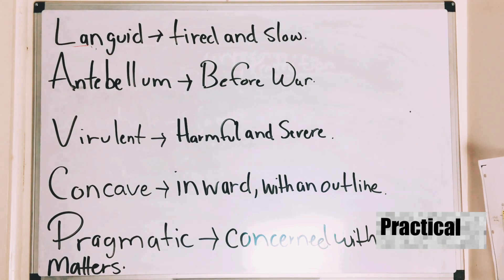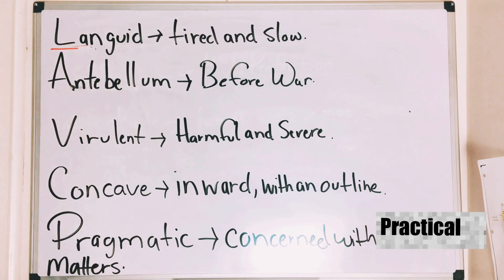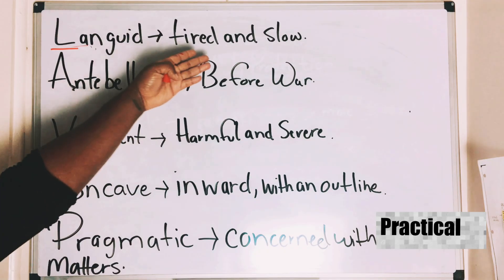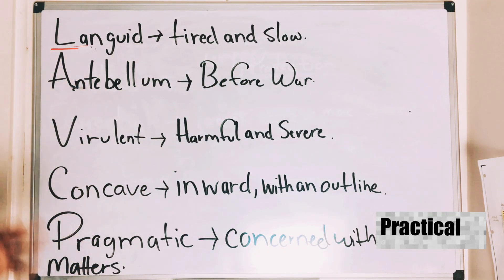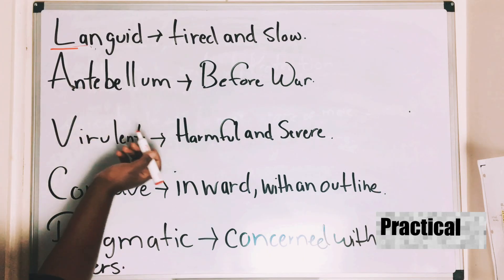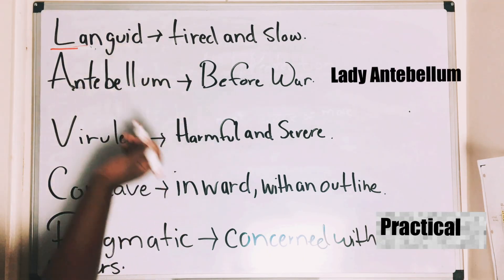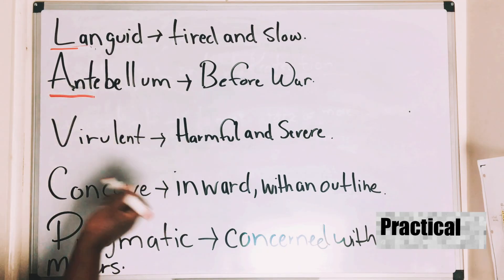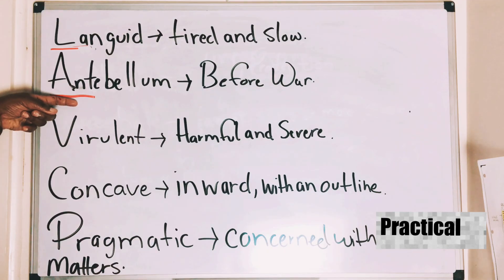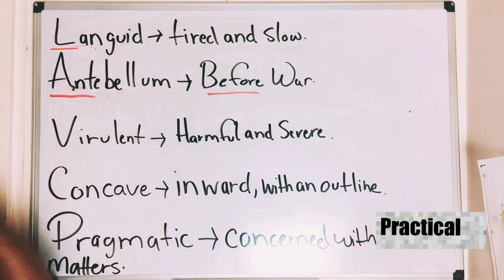Another method I use is making words relatable to a familiar word. For example, 'languid' starts with 'l' — and I remember 'lethargic.' They have very similar meanings: languid means tired and slow, lethargic means sluggish and tired. That helps me remember 'languid.' We also talked about prefixes and suffixes earlier in this video — 'antebellum' is a perfect example. There's also a music group called Lady Antebellum. If you know that 'ante' means 'before,' the definition is right there in the word.